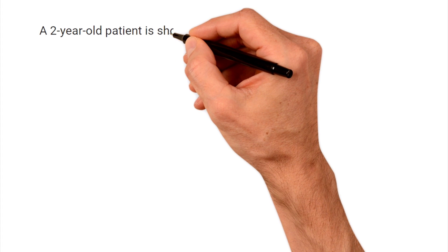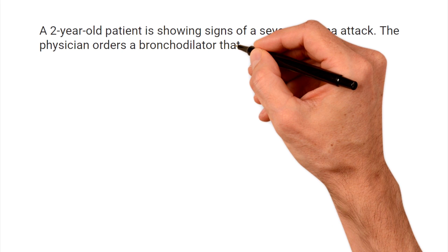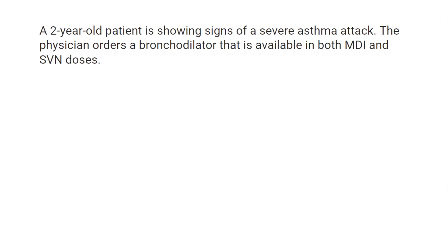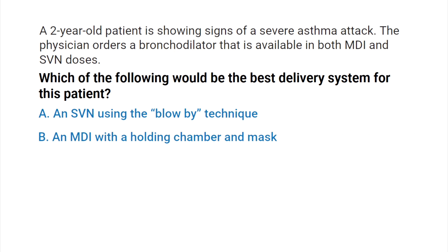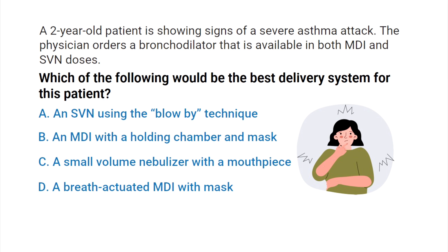A two-year-old patient is showing signs of a severe asthma attack. The physician orders a bronchodilator that is available in both MDI and SVN doses. Which of the following would be the best delivery system for this patient? A) an SVN using the blow-by technique, B) an MDI with a holding chamber and mask, C) a small volume nebulizer with a mouthpiece, or D) a breath-actuated MDI with a mask.